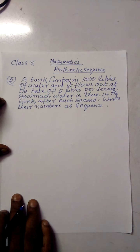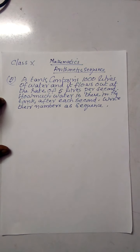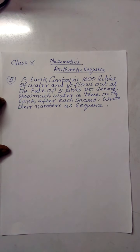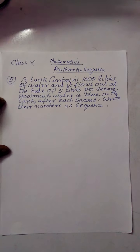A tank contains 1000 liters of water and it flows out. What happens? The quantity of water decreases. There is a quantity of water in the tank, and per second, five liters of water flows out.